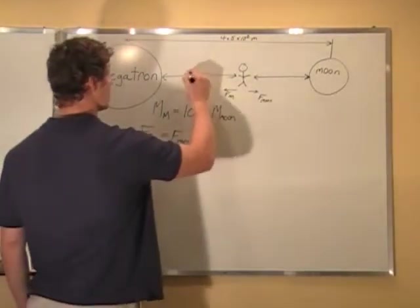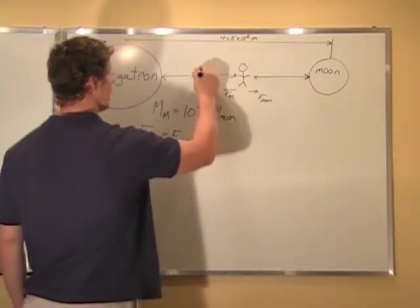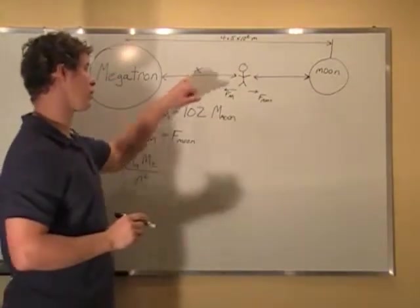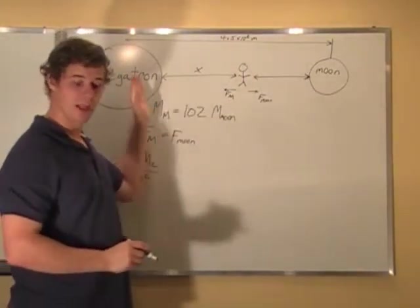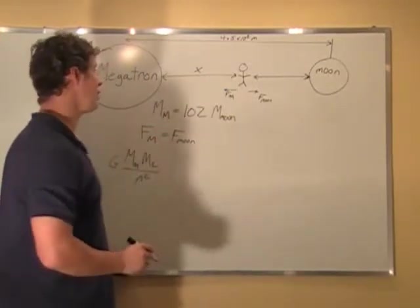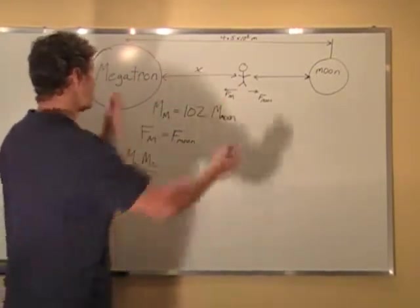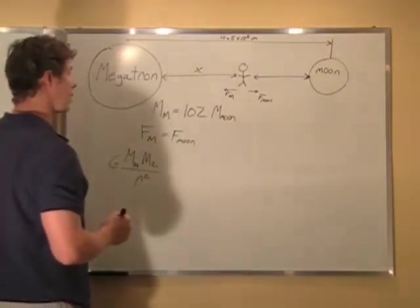Now, if we call this distance from here to the person X, right, because that's the distance we're looking for. What is the distance away from the planet Megatron that you'd have to be? We'll call that X. So that distance, R squared, is X. So this is going to be X squared.